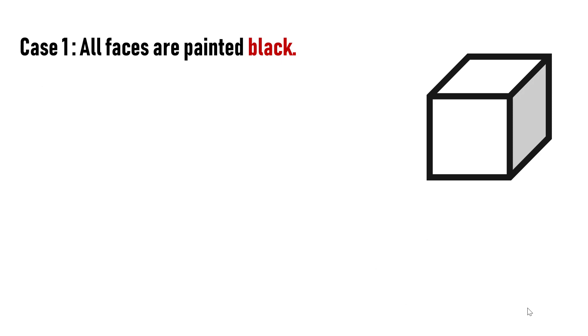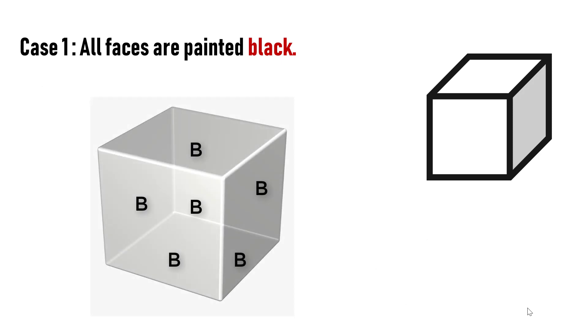In case one, let's assume all the faces are painted black. In this case, total possibilities is only one because you can paint all faces with black only in one way.